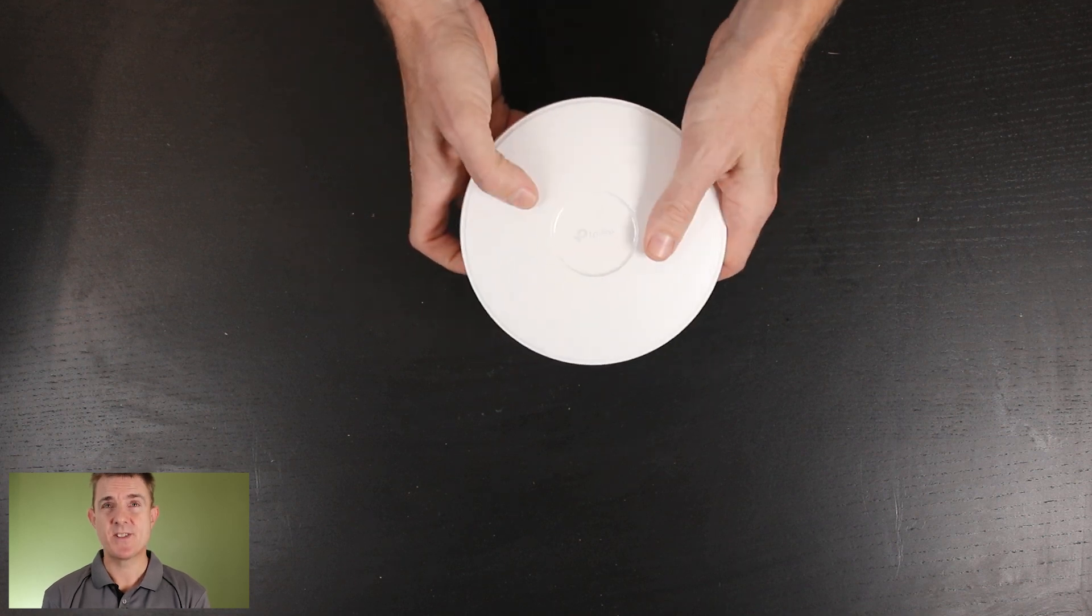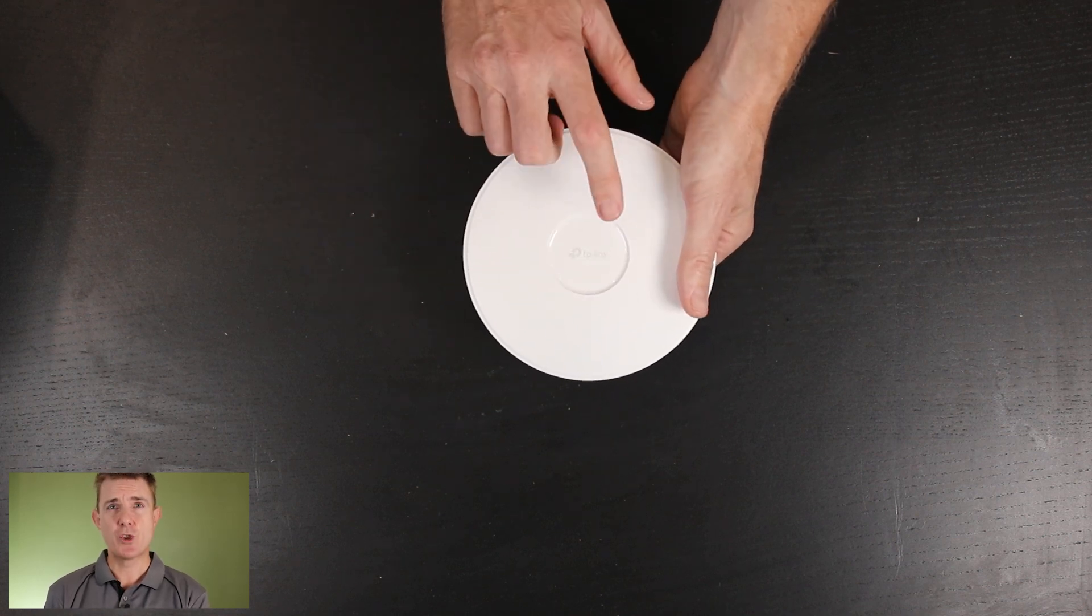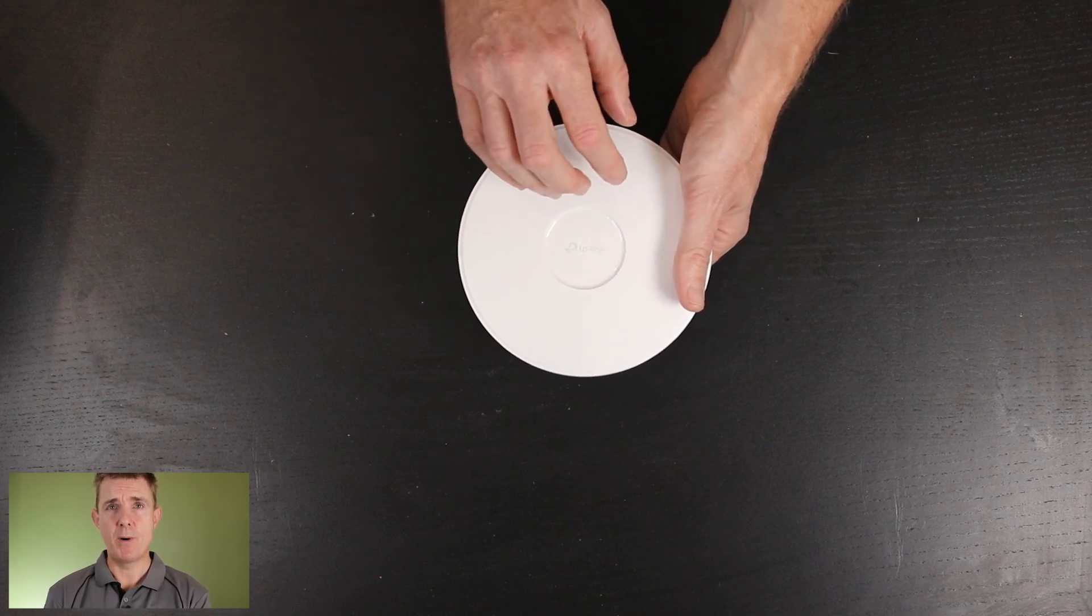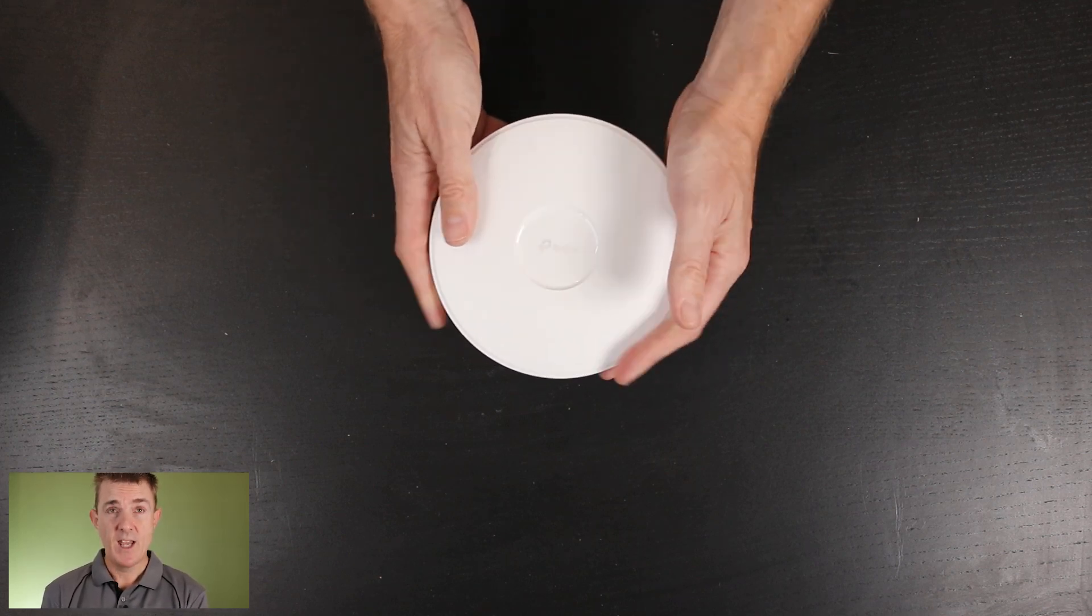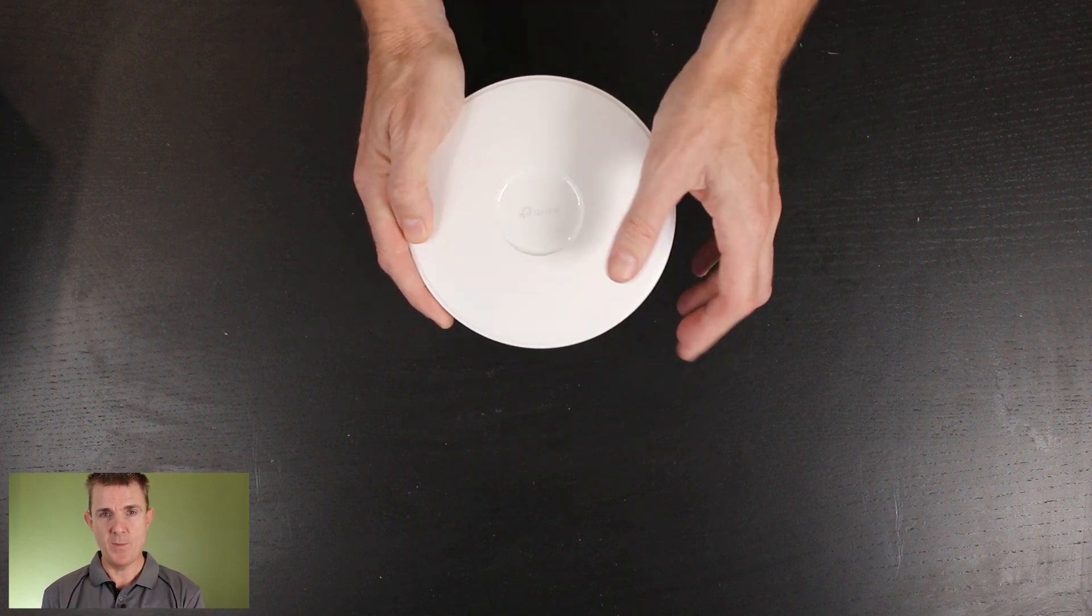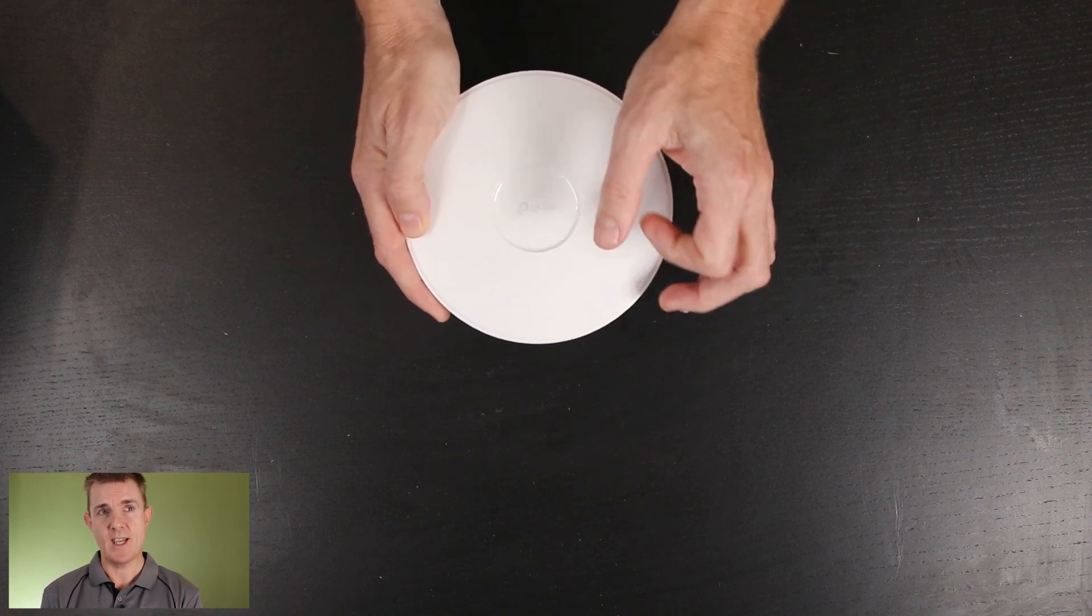This is a Wireless 7 device. It runs in the 2.4 and the 5 gigahertz frequency. We've got a 2x2 radio in both of those frequencies. As you can see, really nice small form factor. And in a moment, I'll bring it up so you can see how small this is.